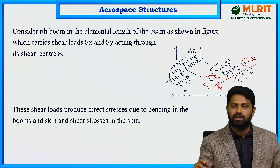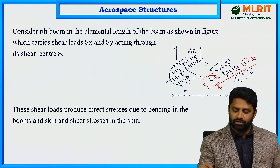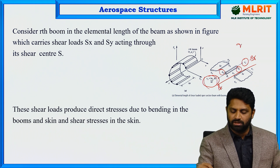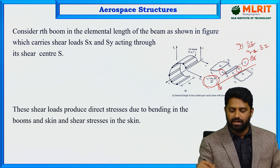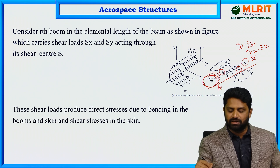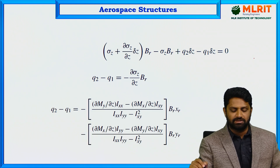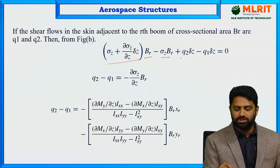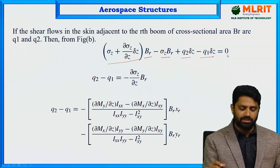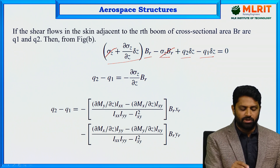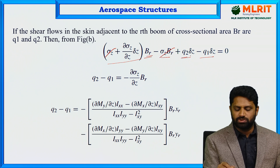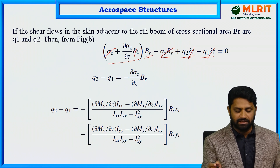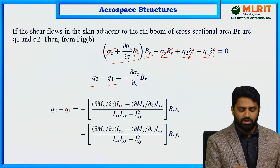From force equilibrium: (sigma_z + ∂sigma_z/∂z · delta_z)·B_r − sigma_z·B_r + q2·delta_z − q1·delta_z = 0. The sigma_z·B_r terms cancel, leaving (∂sigma_z/∂z)·delta_z·B_r + q2·delta_z − q1·delta_z = 0. Dividing through by delta_z: q2 − q1 = −(∂sigma_z/∂z)·B_r.